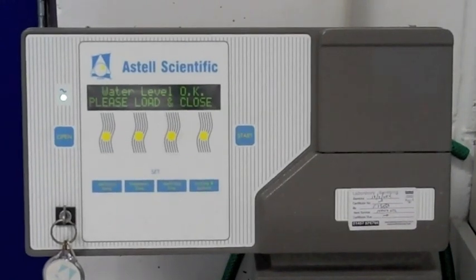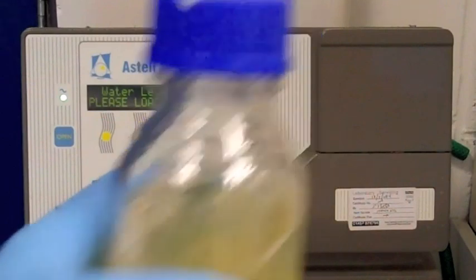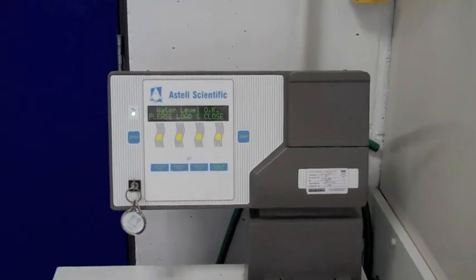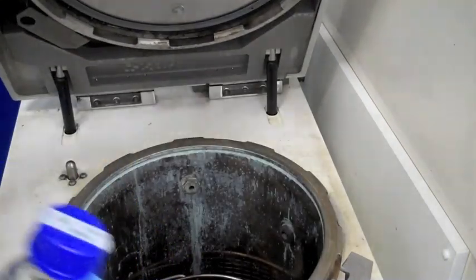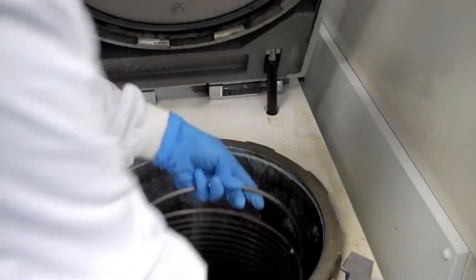So we'll now put in our media into the autoclave and set it going. So we have our bottle of LB Agar that we created. So simply lift the lid of the autoclave. So here it is. Lift the lid. And there will be a basket inside. Place your media into the basket. Make sure the lid is not totally tight, just slightly loose there. Place it into the basket.